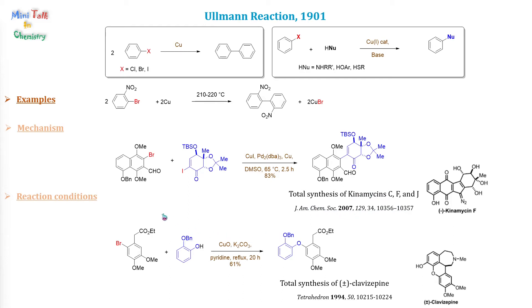The last example is a condensation of aryl bromide and a phenol to give aryl ether. This reaction was used in the total synthesis of clavazepin, published in 1994.